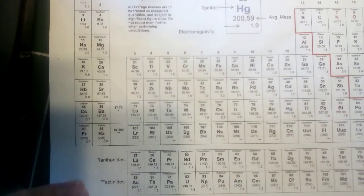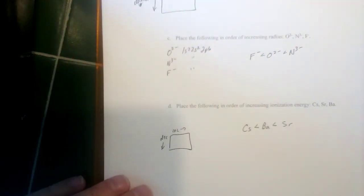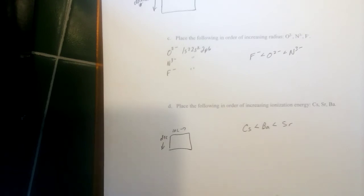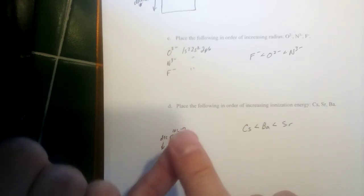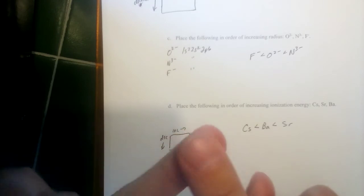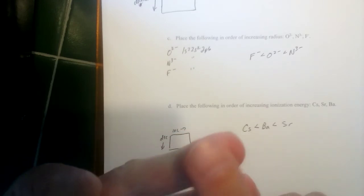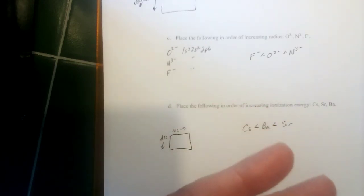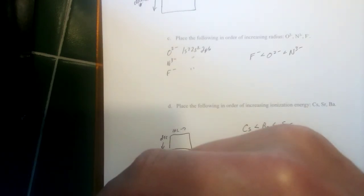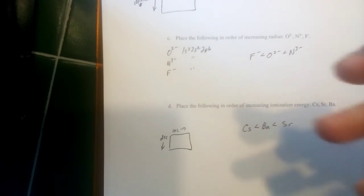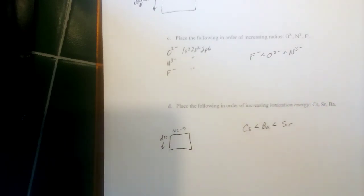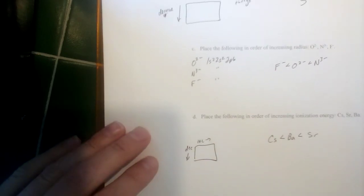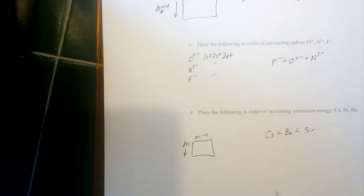That's the end of the practice test. This test generally covers chapters seven and eight. From chapter seven: light and its calculations, atomic structure including quantum numbers and electron configurations, forming cations by removing electrons and anions by adding electrons, applying quantum number rules, and predicting electron configurations from the periodic table.